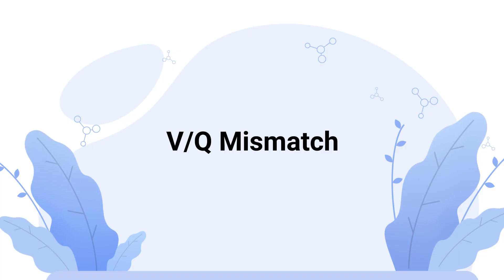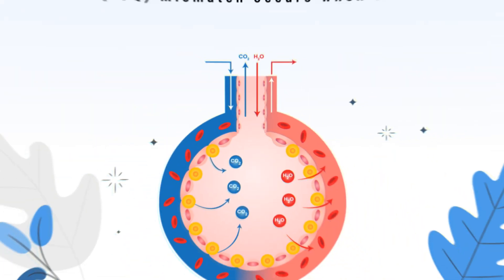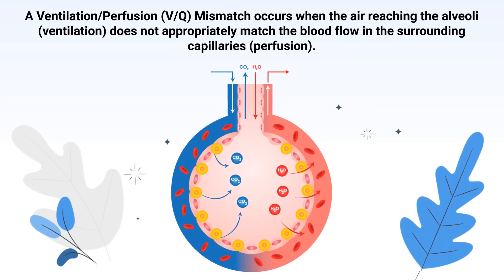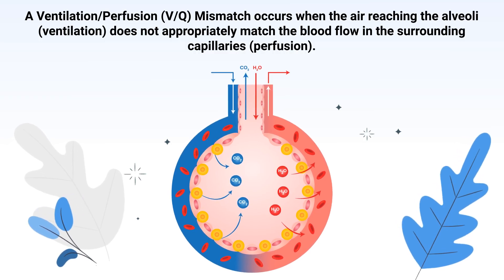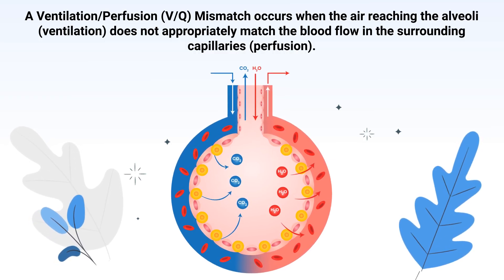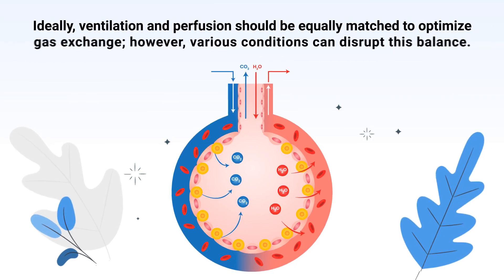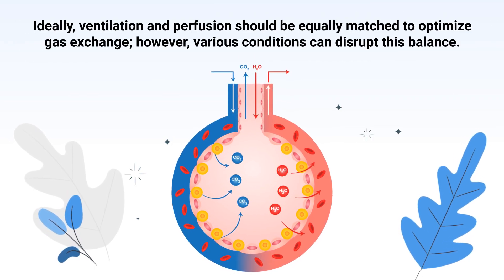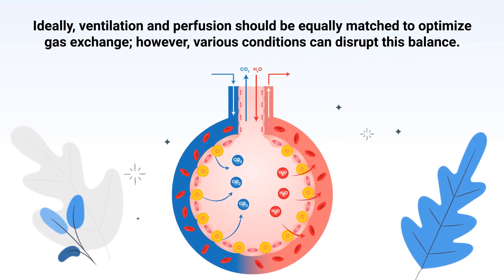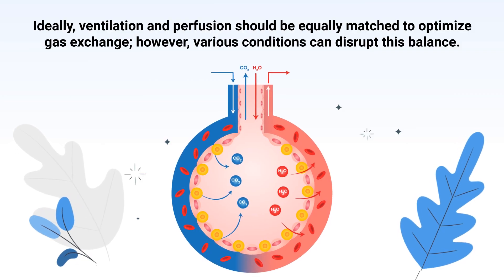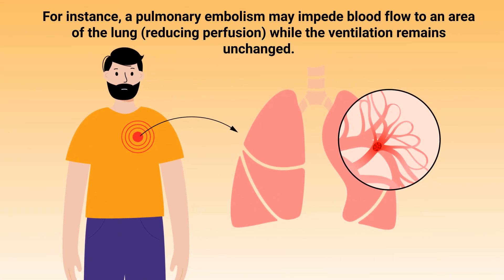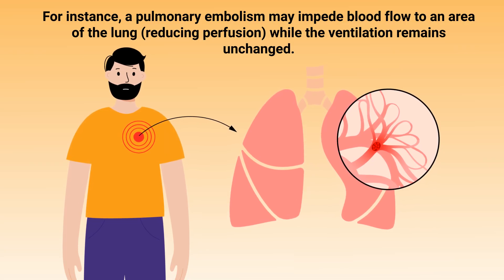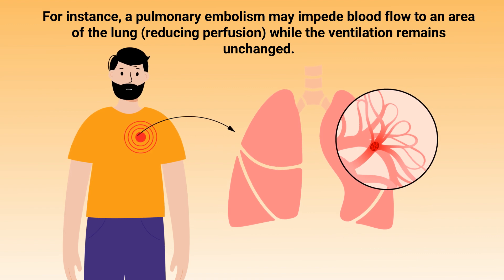Number 2, VQ mismatch. A ventilation-perfusion mismatch occurs when the air reaching the alveoli does not appropriately match the blood flow in the surrounding capillaries. Ideally, ventilation and perfusion should be equally matched to optimize gas exchange. However, various conditions can disrupt this balance. For instance, a pulmonary embolism may impede blood flow to an area of the lung, reducing perfusion while the ventilation remains unchanged.